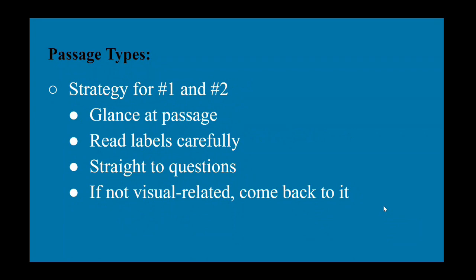So strategies for the first and second types are glance at the passage, look over it broadly, because if you start reading it in detail, then chances are you'll get bogged down in unnecessary details that you don't need to know to answer these questions and likely you'll get confused. So just glance at the passage, read the labels of the charts, tables, and diagrams carefully, and graphs to understand what they're showing you and how they relate to one another. Then go straight to the questions and you can even do a line-by-line strategy because these questions will be like, based on figure one, how does this independent variable affect the dependent variable? And that's something that's very straightforward that you don't need to read the entire passage to answer. And then if the question is not visual related and you can't answer it within a shorter amount of time, then move on and come back to it.